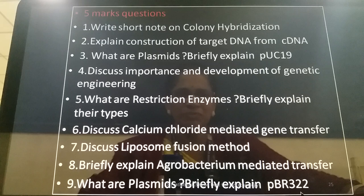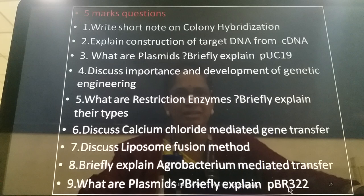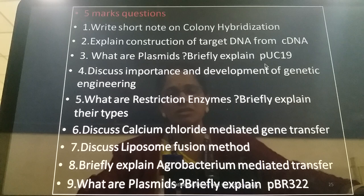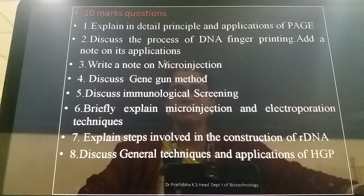When asked about plasmids and PBR-322, you can also focus on how to screen PBR-322 through insertion inactivation. For 5 marks, just define plasmids, explain the structure and representation of PBR-322, and give its characteristics — the screening methodology is not necessary. For the same question asked as a 10-mark, focus on the structure of PUC-19 and also how to screen the recombinant PUC-19, discussing blue and white colonies.